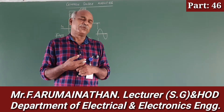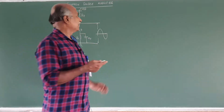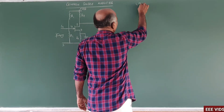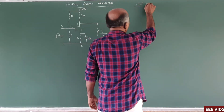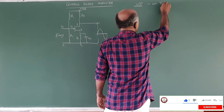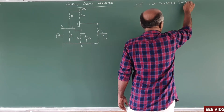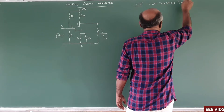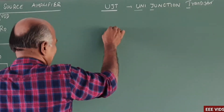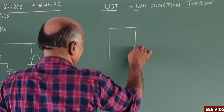The component is UJT — Uni Junction Transistor. Similar to the FET, in the UJT there is a bar-type semiconductor, either N-channel or P-channel.